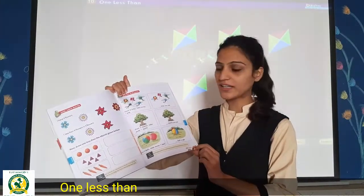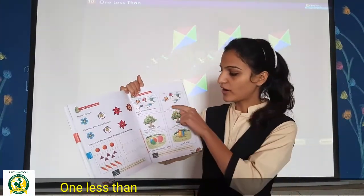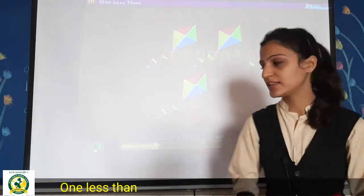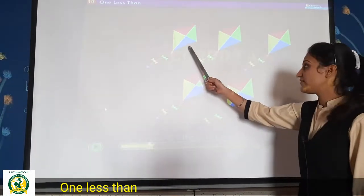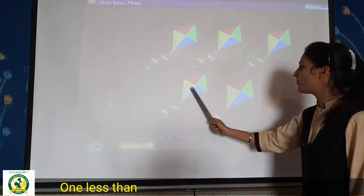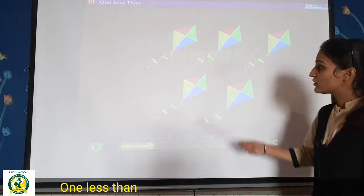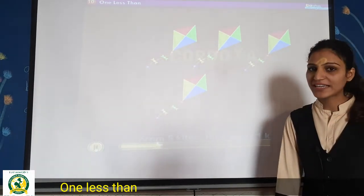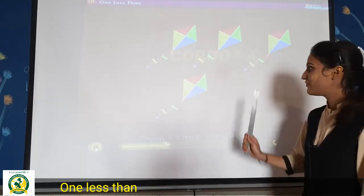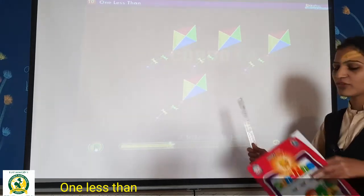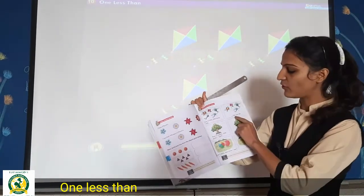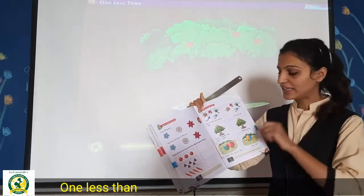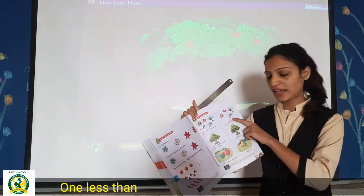Page number 161. Here you also need to write in the blanks along with me. See: here we have five kites — one, two, three, four, five. Take away one kite, so how many are left? Only four kites. So write four here. From five kites, take away one, four kites are left — write four. Next, from three apples on the tree, take away one apple, so only two apples are left — write two in your book.